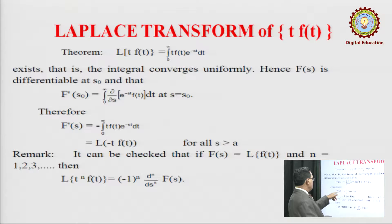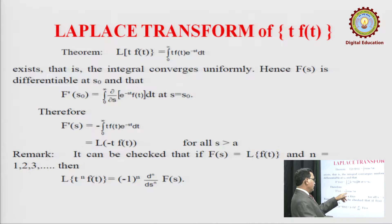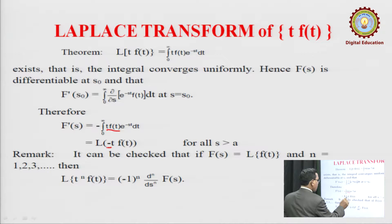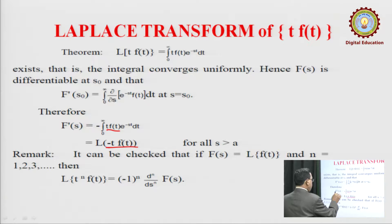Therefore, F'(s) = -∫₀^∞ t·f(t)·e^(-st) dt. The integral on the right is the Laplace transform of t·f(t). Rearranging to the left side, we obtain the result: L{t·f(t)} = -F'(s), or equivalently, -d/ds of F(s).